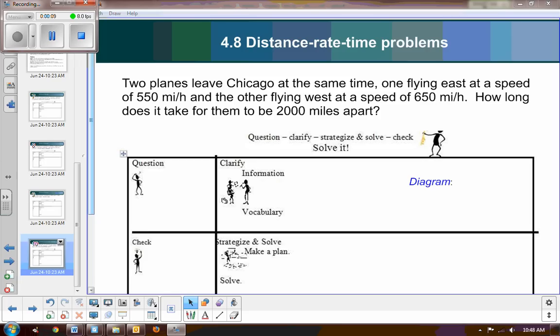So let's get going. We have two planes that leave Chicago at the same time. One is flying east at a speed of 550 miles per hour. The other flying west at a speed of 650 miles per hour. How long does it take for them to be 2,000 miles apart?